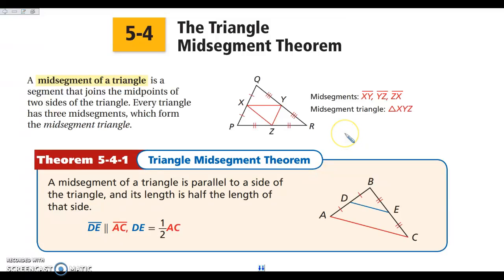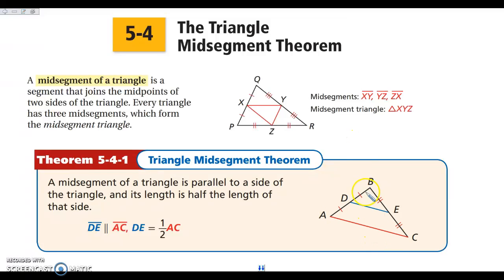There are a couple of things we know when we have mid-segments. First, a mid-segment is going to be parallel to the side that it doesn't touch. So segment DE touches this side and this side, so DE is going to be parallel to AC. It is also going to be half the length. So if DE is 10, then AC is 20. They will be parallel and it will be half the length.